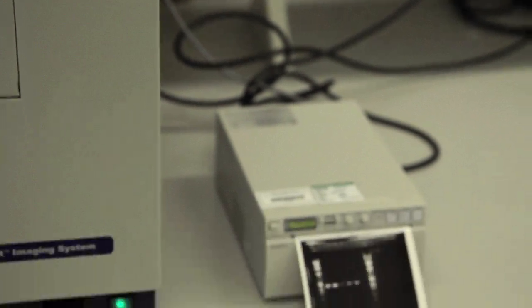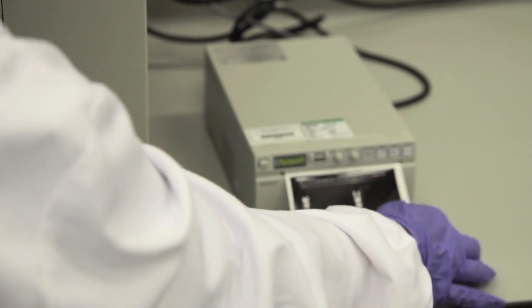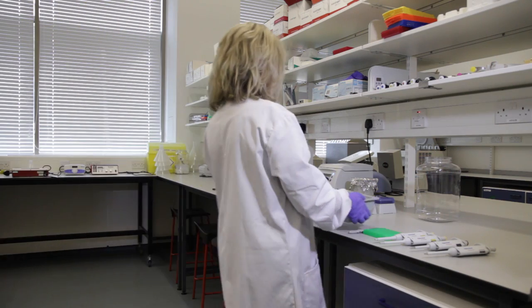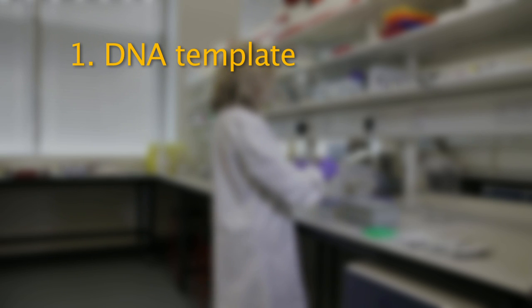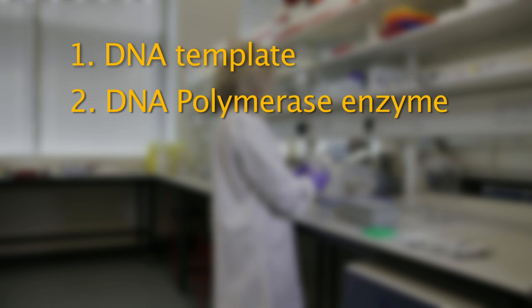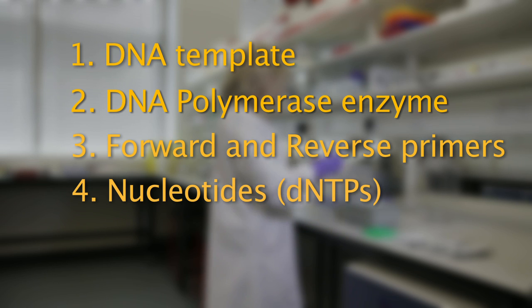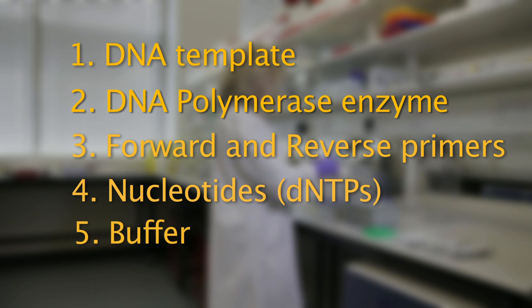The theory behind every PCR, whatever your DNA target, is the same. A mixture is created that contains five basic things: your DNA template, a DNA polymerase enzyme, forward and reverse primers and nucleotides (also known as DNTPs), and buffer to stabilize the enzyme.